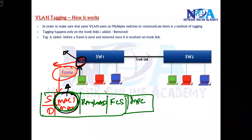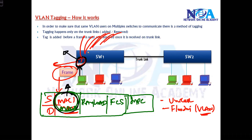The switch will see the destination MAC address and do one of two things: unicast, if it knows exactly which port that device is connected to, or flooding/broadcast within the VLAN. Let's assume it is going to broadcast — it broadcasts out of all links within the same VLAN. Let's say the green VLAN — all the ports in that VLAN.